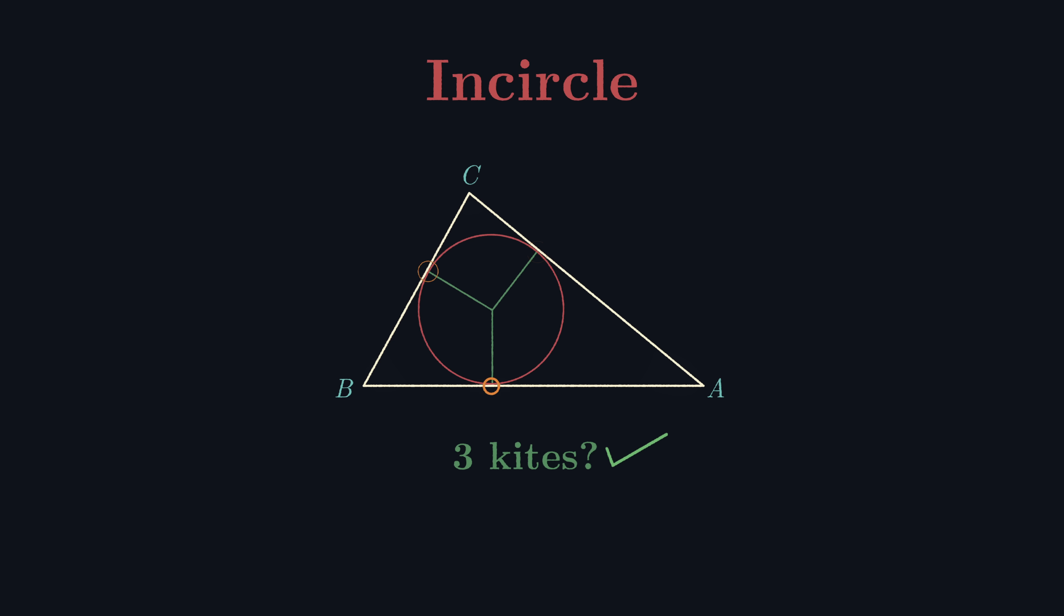You might start to see where this is going. First, for convenience, I'm going to label the vertices of the triangle as A, B, and C, and the in-center as I. Also, label these contact points as IA, IB, and IC.